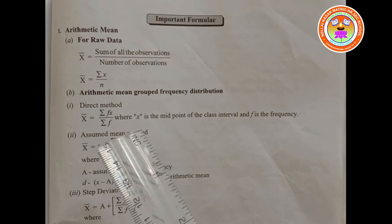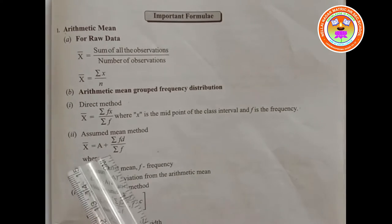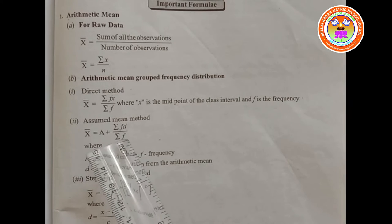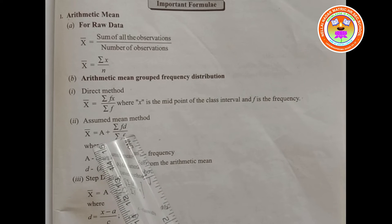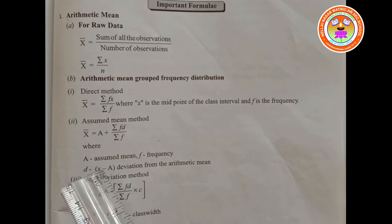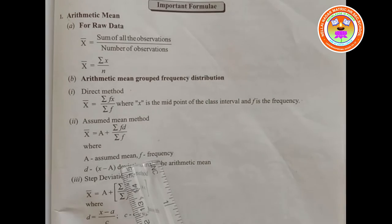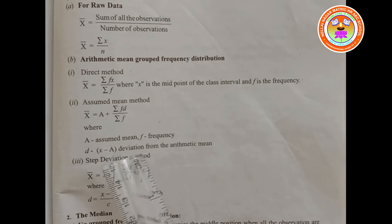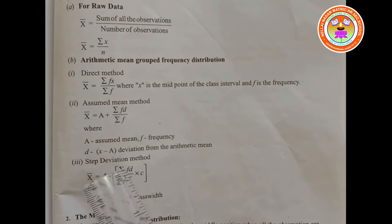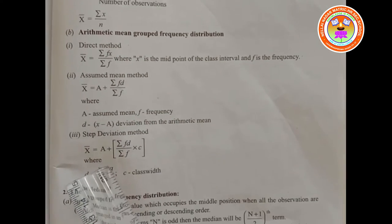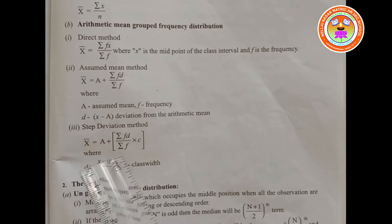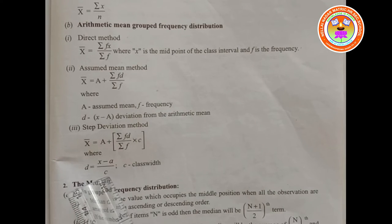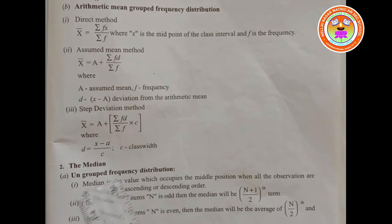This is grouped frequency distribution. Then assumed mean method: x̄ = A + (Σfd / Σf), where A is the assumed mean, f is the frequency, and d = x − A, the deviation from the arithmetic mean. Third one, step deviation method: x̄ = A + (Σfd / Σf) × c, where d = (x − A) / c and c is the class interval width.